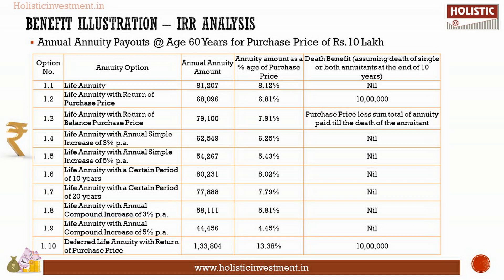Now let us move on to the returns analysis, which will guide you on whether you should buy the plan or not. We have worked out the internal rate of return (IRR) of SBI Life Smart Annuity Plus using the figures given in the policy brochure. The table here depicts the annuity amount receivable under different plan options, worked out based on a purchase price of rupees 10 lakhs for a healthy male aged 60 years, with a deferment period of 10 years. The percentage shown denotes the percentage of the purchase price given as annuity, not the actual returns.